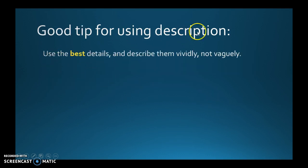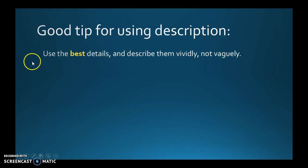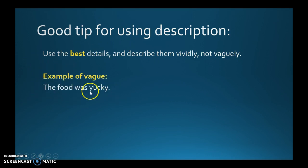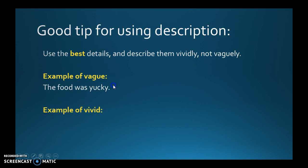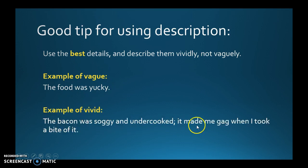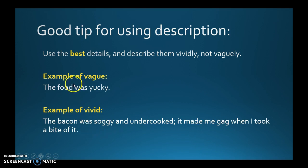Make sure you're using description for a purpose, and use the best details, described vividly and not vaguely. For example, vague: 'The food was yucky.' That describes something, but what food? What made it yucky? That's pretty vague — not very vivid, not really using the best details. An example of vivid: 'The bacon was soggy and undercooked; it made me gag when I took a bite of it.' We're talking about bacon, what made it yucky — soggy and undercooked, made me gag — actually using description of how it tasted or felt. That's more vivid.